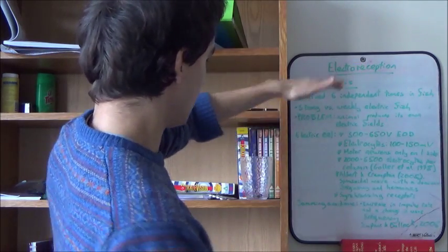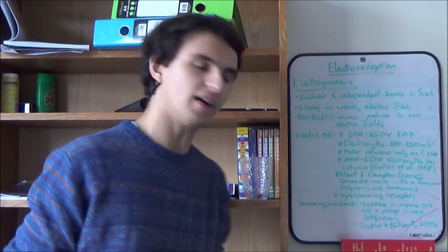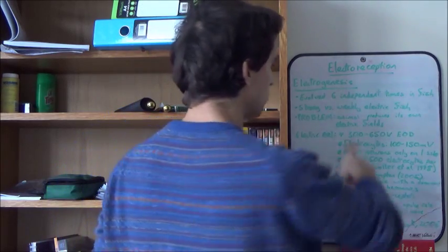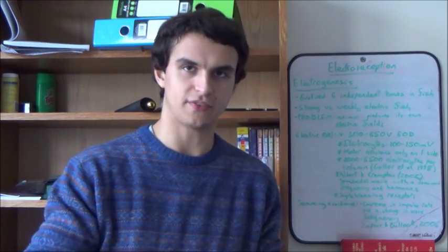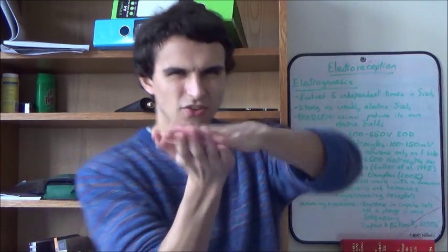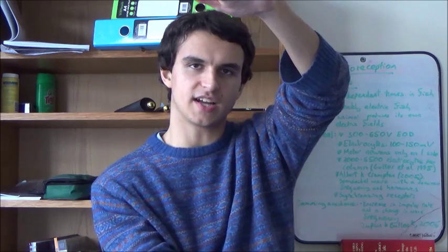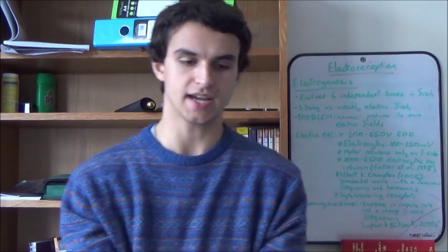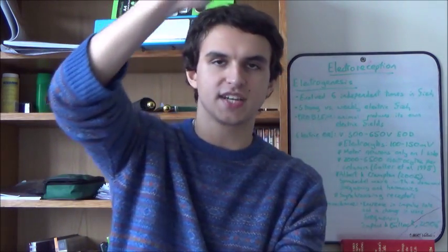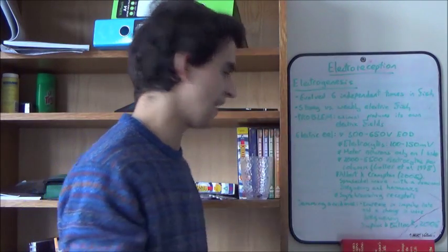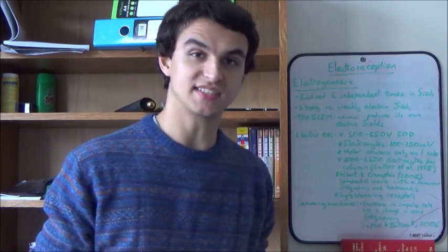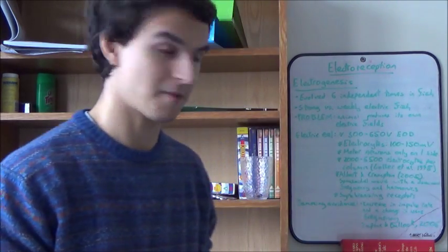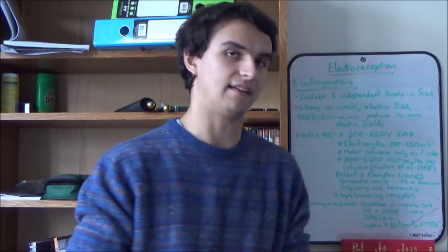By stacking them up, you can get 2,000 to 6,500 electrocytes per column. You can do the math how that gives you 300 to 650 volts. But it's not just one big stack—you've also got rows as well, further increasing the current. The stacks of electrocytes increase the voltage; the amount of rows increases the current. That leads to a pretty impressive electric shock which electric eels produce when they want to stun their prey. All this was summarized by Gotter et al. in 1998.